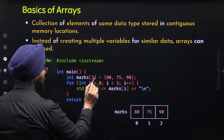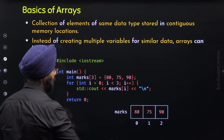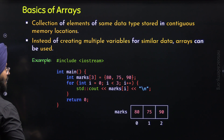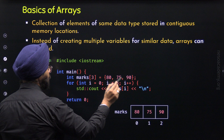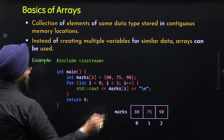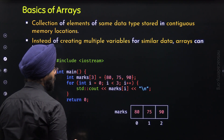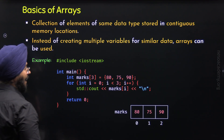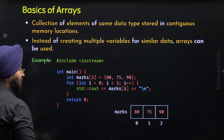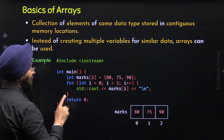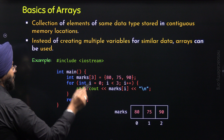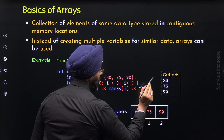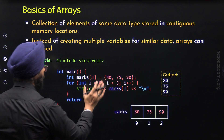Here we have a for loop with one std::cout statement — three std::cout statements have been replaced by one. The variable i is initialized to 0. We check if i is less than 3: yes, this is true, so the std::cout statement executes and marks[0], which is 80, is displayed on the screen followed by a new line. Then i++ makes i equal to 1. We know 1 is less than 3, so marks[1] which is 75 is displayed. Then i gets value 2 and marks[2] which is 90 is displayed. After this, i is incremented to 3, and since 3 is not less than 3, the condition is false and we exit the for loop. We get the same output 80, 75 and 90.